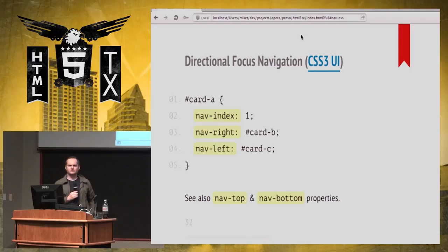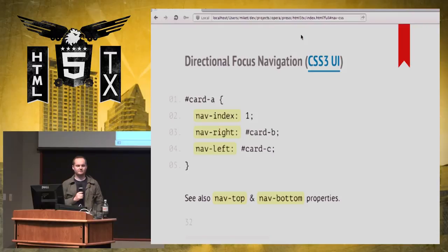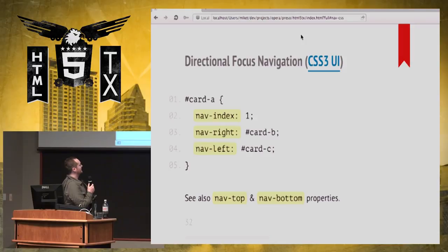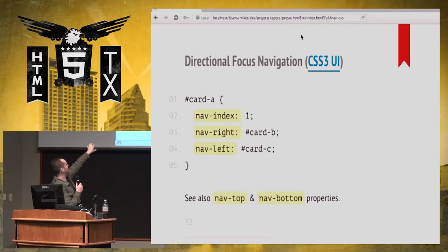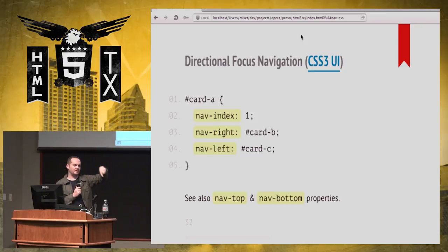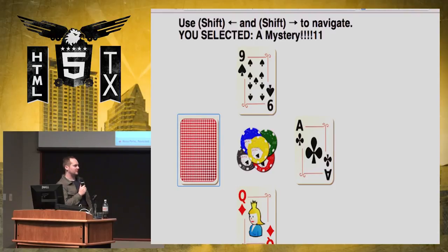There's a CSS3 module called the User Interface module. It has these properties: nav-index, nav-right, nav-left, nav-top, and nav-bottom. You give elements an ID, and basically you're saying: if I'm on card A and I nav-right — which maps to the right button on my remote control — focus should hop to card B. This is how I can control the clockwise or counterclockwise movement in my card game.